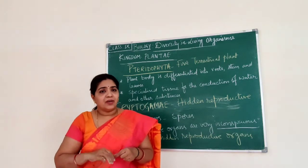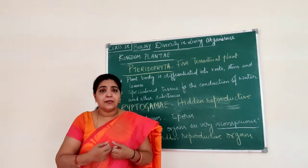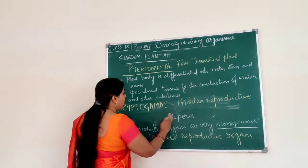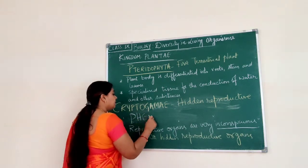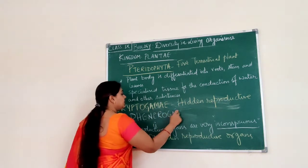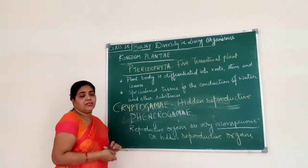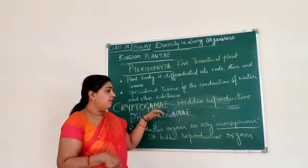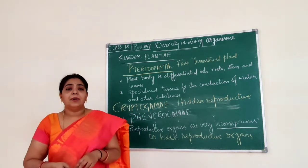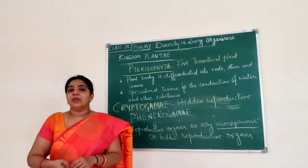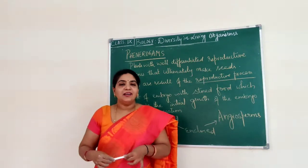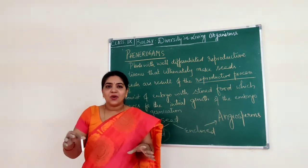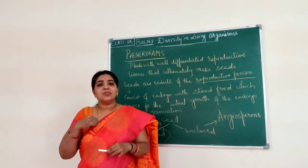Plants in which we can identify their reproductive organ — whether it is the flower, and the seeds produced are covered by a hard coat or a fruit — are included under a group called phanerogamy. So these are the two types: if the reproductive organs are hidden, we say cryptogamy; if they are visible, they come under phanerogamy. Cryptogamy plants reproduce by producing spores.